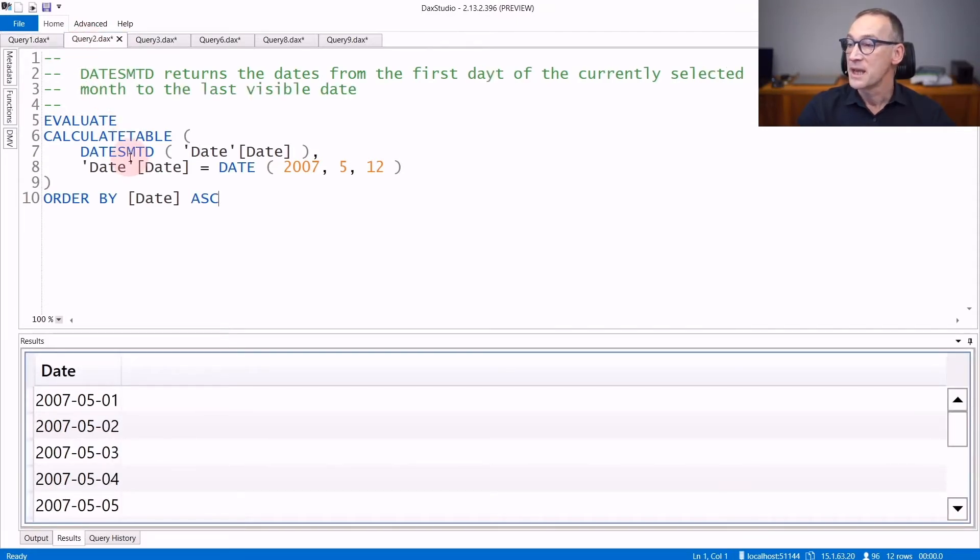If you use DatesMTD, the result does not contain the data starting from the 1st of January, but instead starts from the 1st of May. You see that we have data starting from the 1st of May and going to the 12th of May 2007.